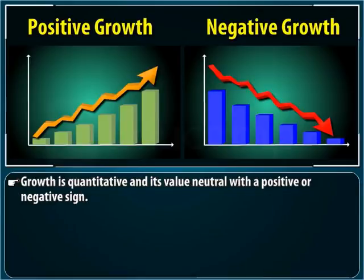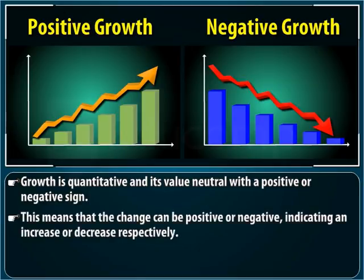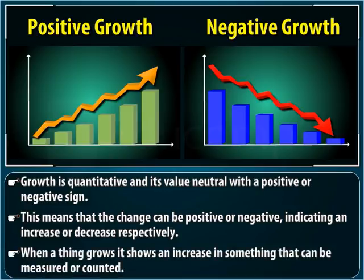First, let us discuss growth. Growth is quantitative and value-neutral with a positive or negative sign. This means that the change can be positive or negative, indicating an increase or decrease respectively. In simple words, when a thing grows, it shows an increase in something that can be measured or counted.